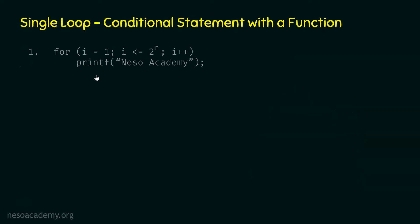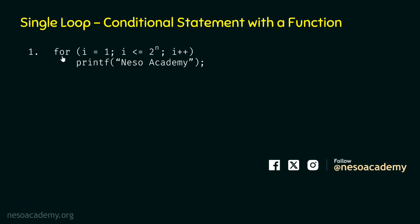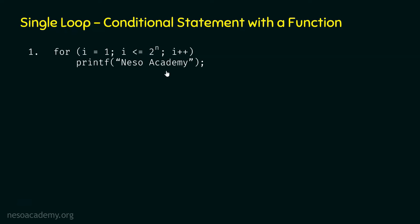Let's say this is the for loop and our job is to determine the time complexity of this for loop. The initialization statement is i equal to 1. The conditional statement is i less than or equal to 2 power n. The update expression is i plus plus. Within this for loop, we have the printf function, which prints 'Neso Academy' when we execute this loop.